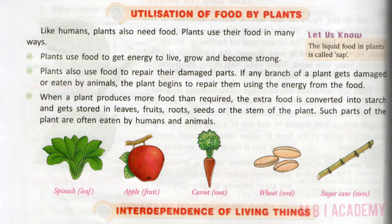For example: spinach leaves are eaten, apple is a fruit, carrot is a root, wheat is a seed, and sugarcane stem is used.